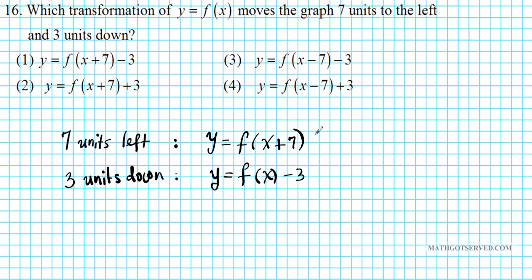Alright, so the combined transformation, we just unite these two together to get a function that shifted seven units left and three units down. So we have y equals f(x + 7). That means seven units to the left minus three, which means it's three units down. So our answer is option number one.